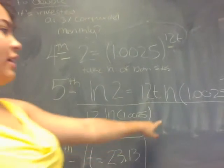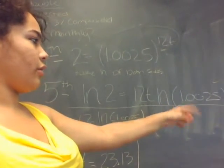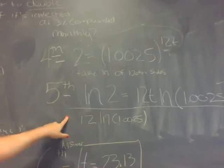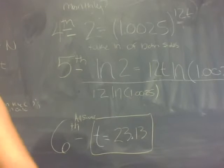And then you divide your right side, 12 LN of 1.0025, by LN of 2. And the answer is 23.13. Yay!